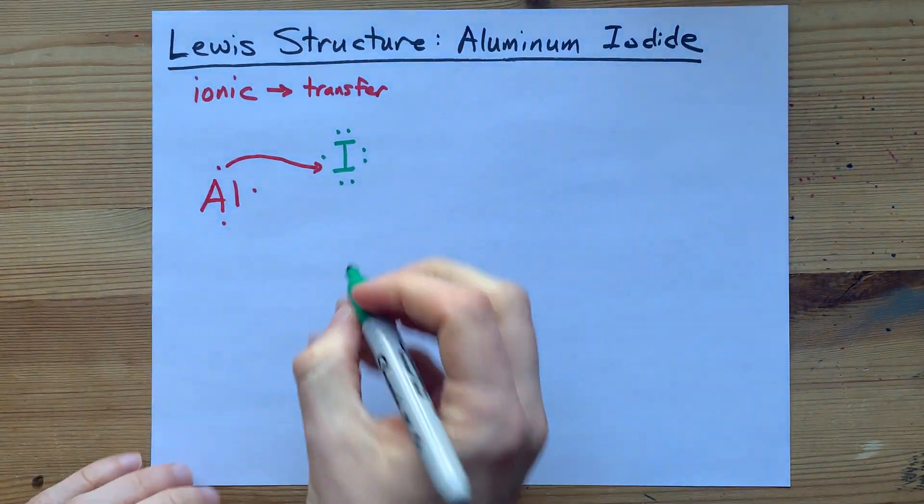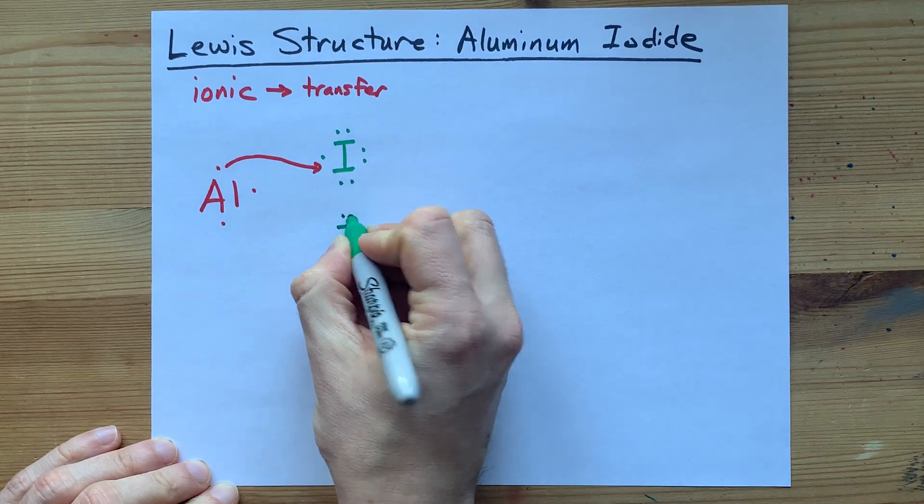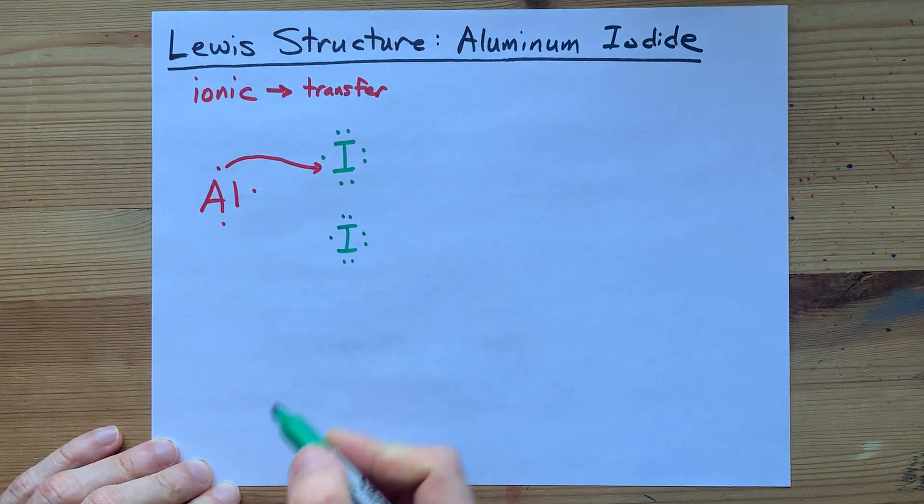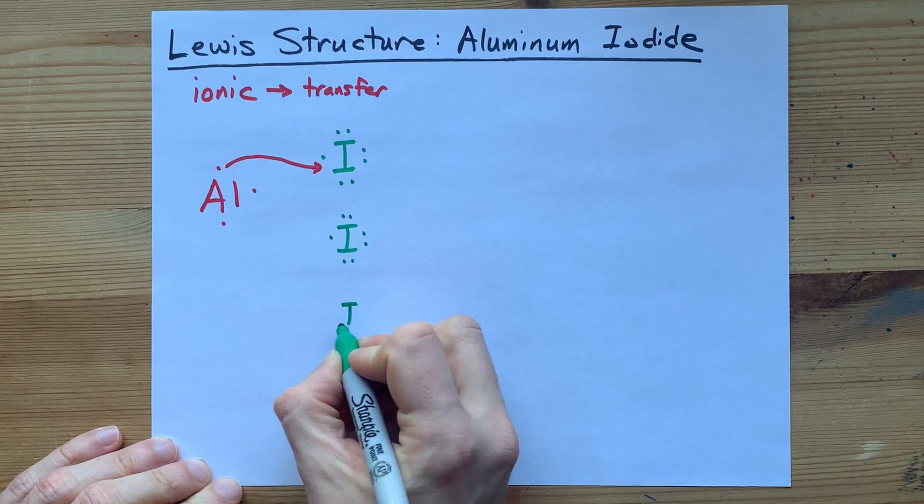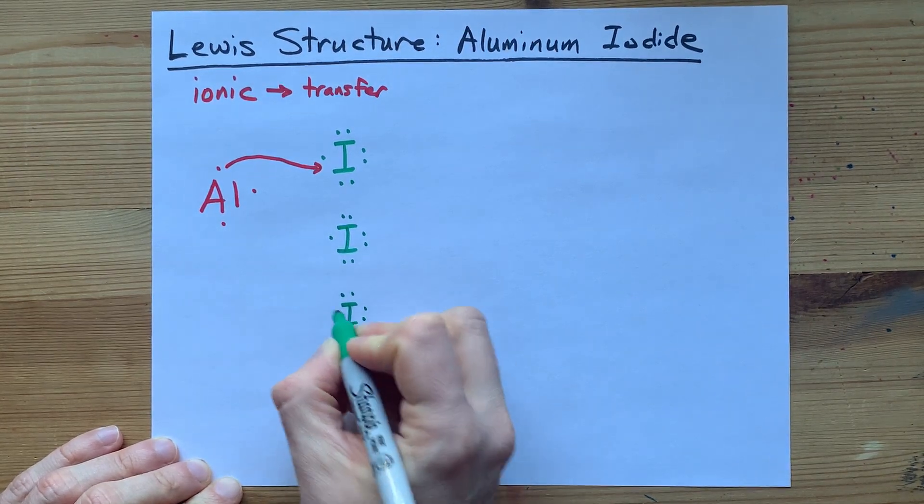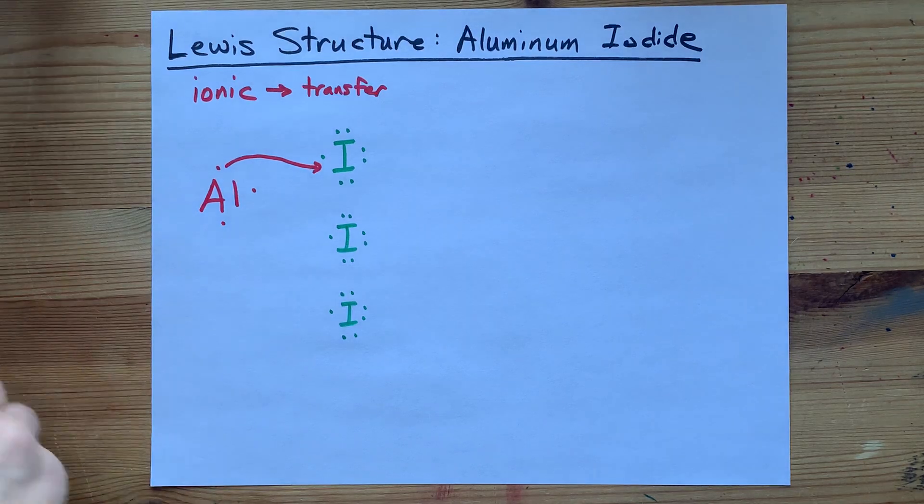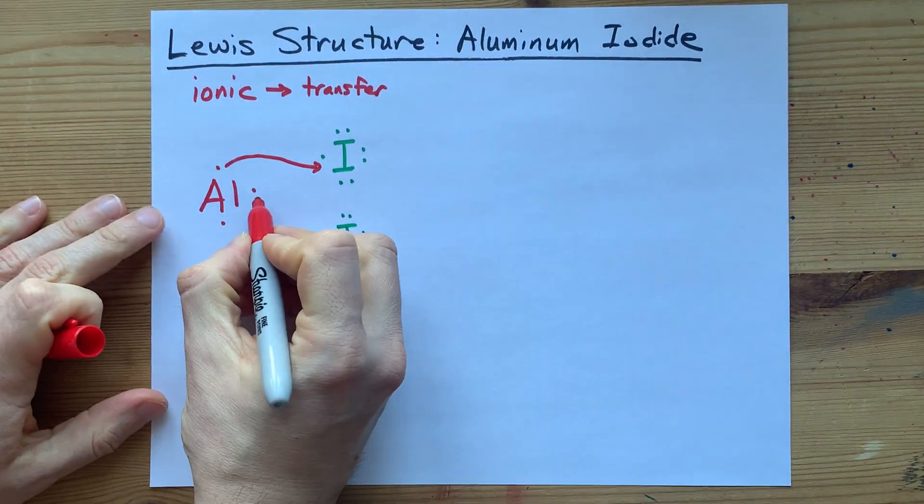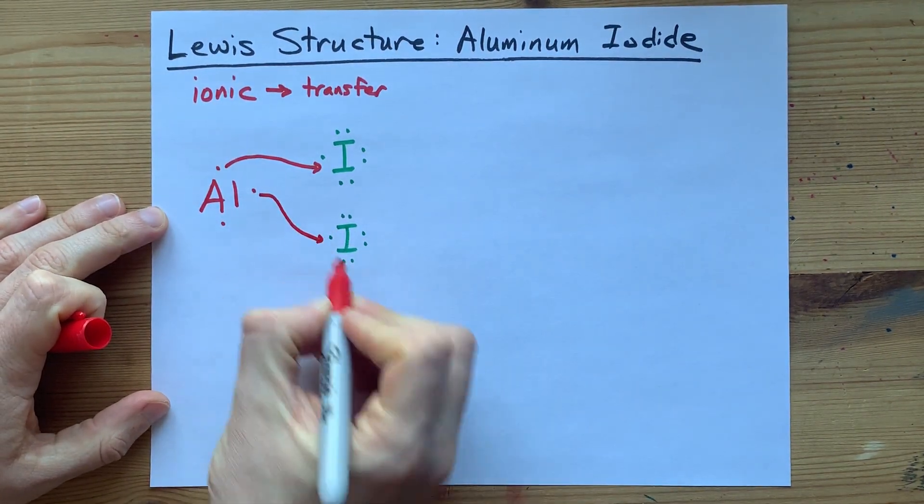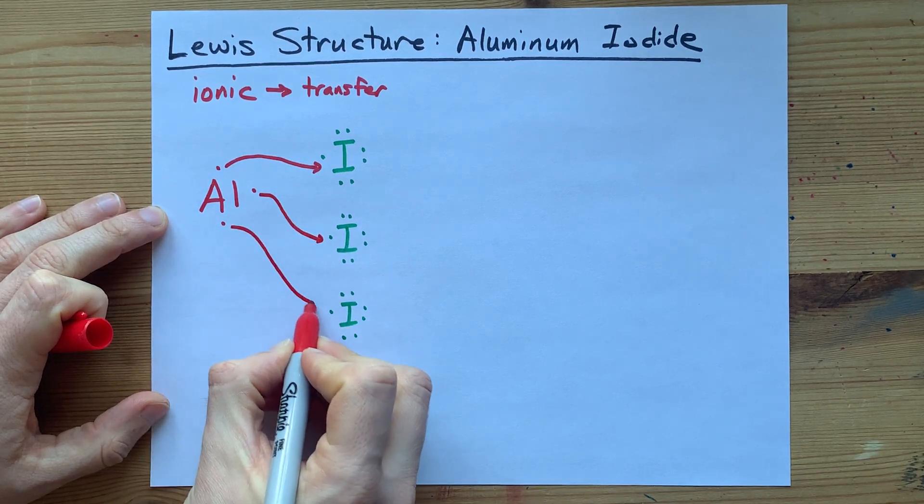More iodines could come into play. One, two, three, four, five, six, seven valence electrons for that iodine. One, two, three, four, five, six, seven valence electrons for a third iodine. And now,